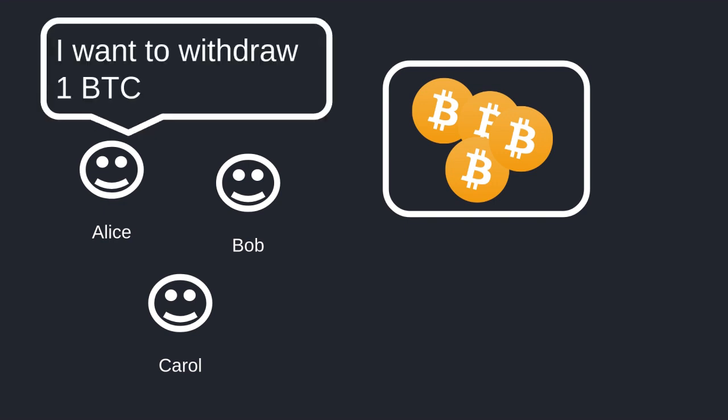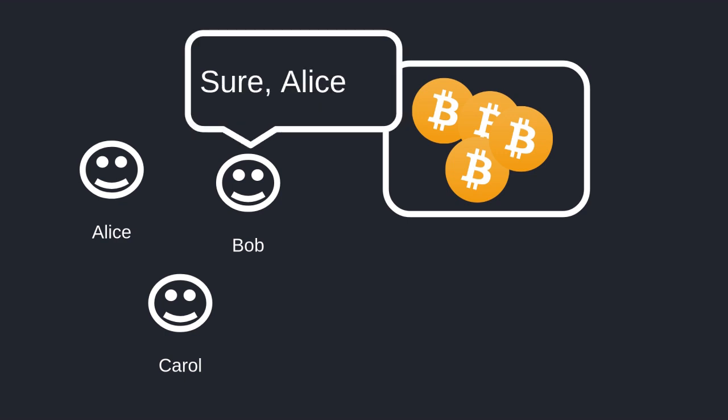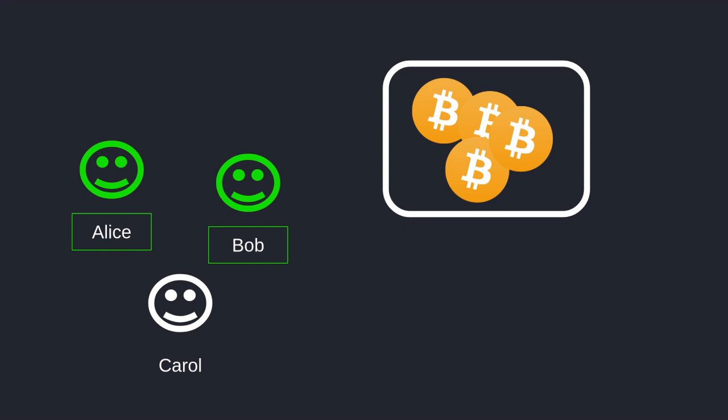For example, Alice says I want to withdraw one bitcoin, and Bob approves Alice to spend one bitcoin. So that's two owners that agree that Alice can withdraw one bitcoin, which satisfies the condition that at least two of the owners have to approve the transaction. And Alice is able to withdraw one bitcoin.